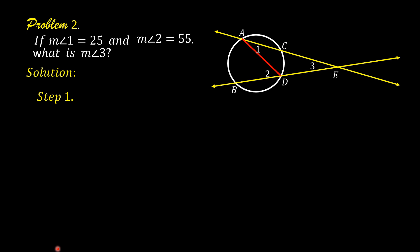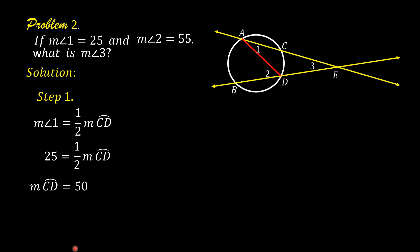For step 1, the measure of angle 1 is equal to one-half the measure of arc CD. The measure of angle 1 is given as 25, so we substitute: 25 is equal to one-half the measure of arc CD. Cross multiply, so the measure of arc CD is equal to 50.